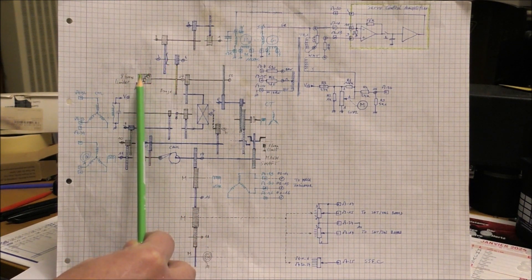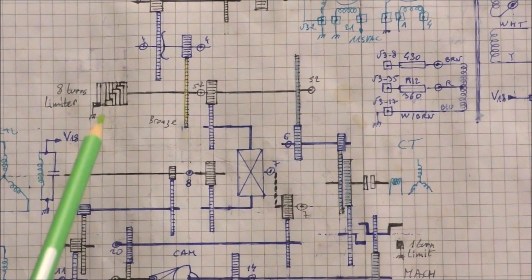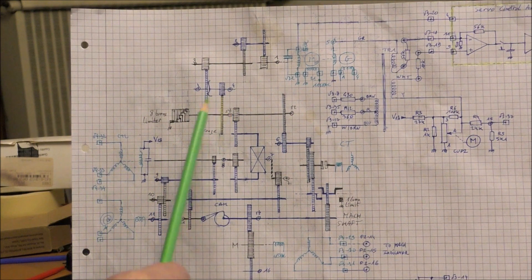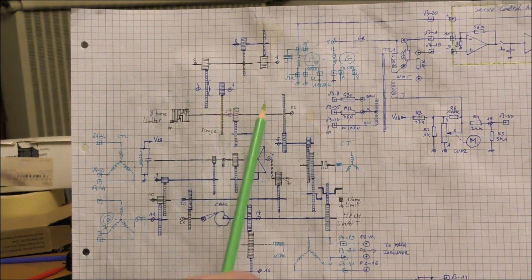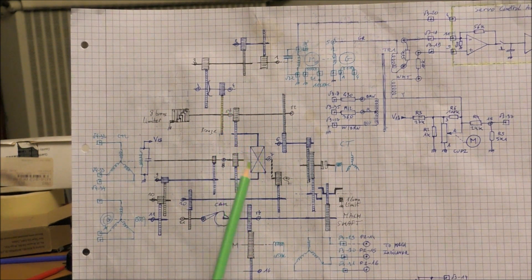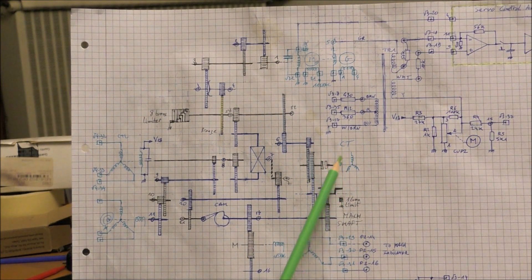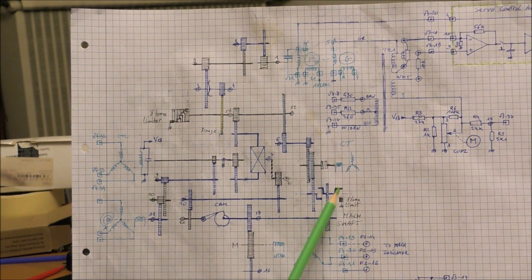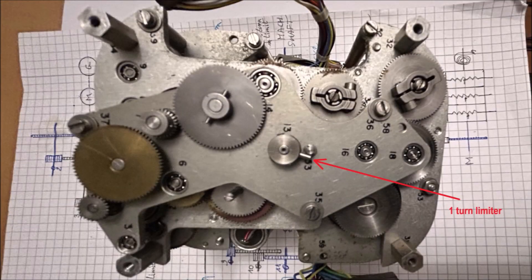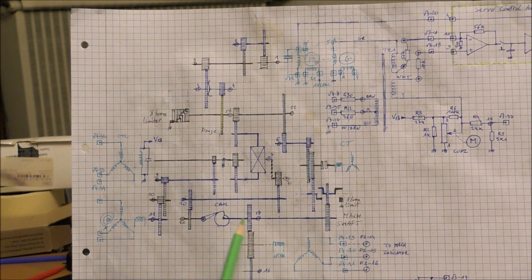There is a device here which limits the rotation to 8 turns. We can see this 8-turns limiter. The rotation of the motor is fed to two different things: the rotation is fed to one input of this differential, and also the rotation of the motor permits to rotate the output shaft, which is this shaft here. There is here a control transformer with a clutch. I don't know exactly at that time what is the purpose of this control transformer. There is here also a kind of clutch, so this permits to engage this gear in one turn. There is also a one-turn limiter. This limiter is required because of the cam which is here.